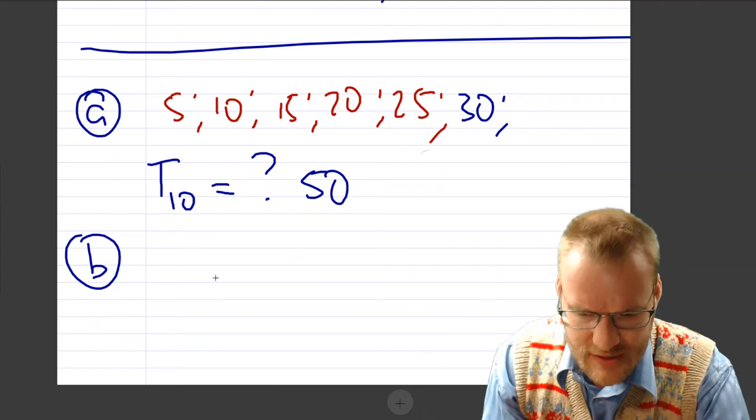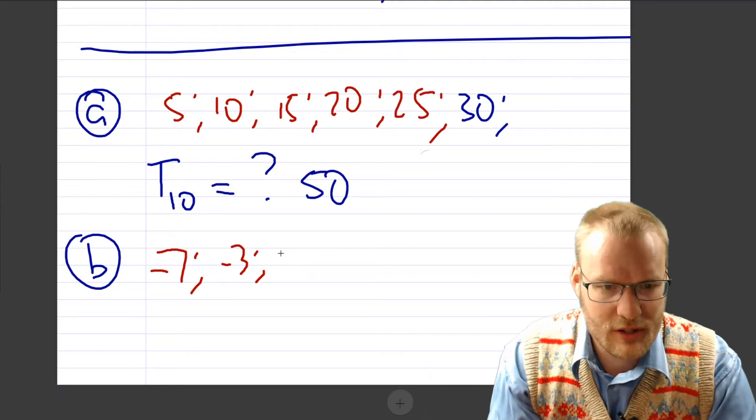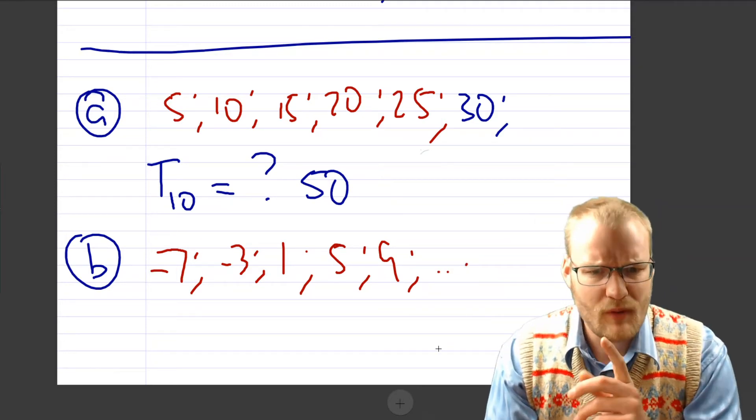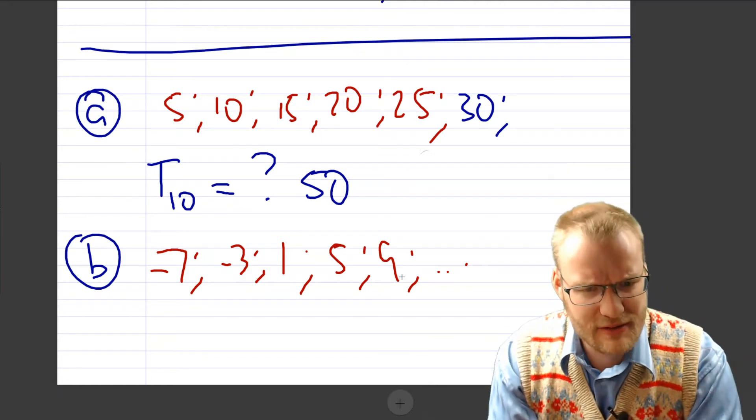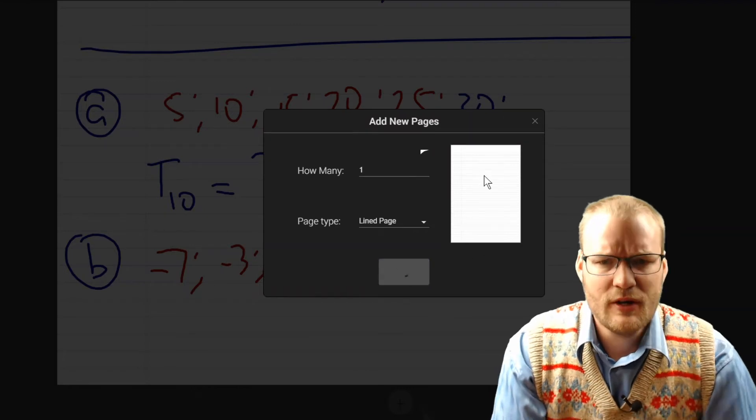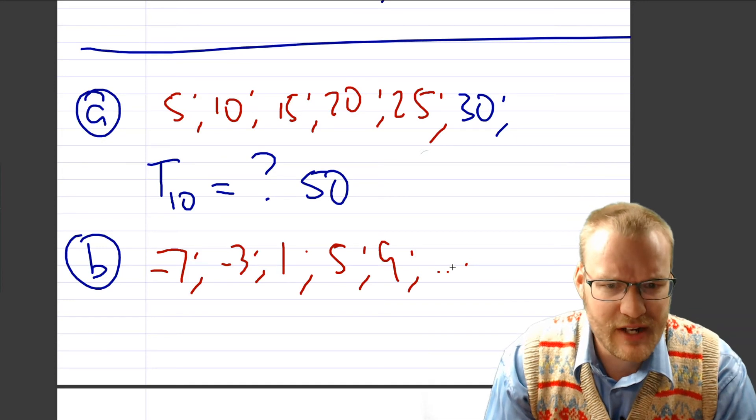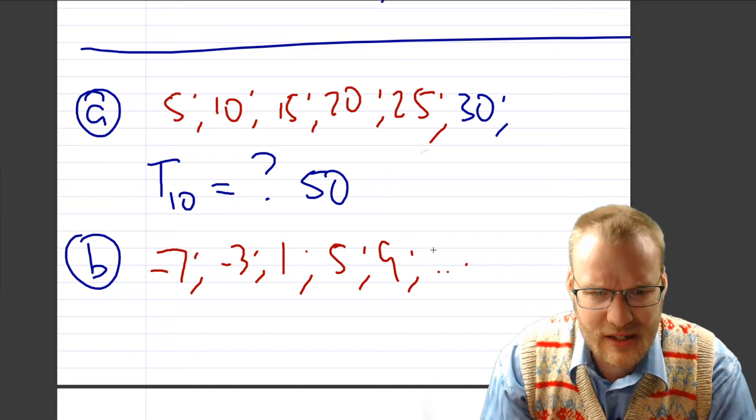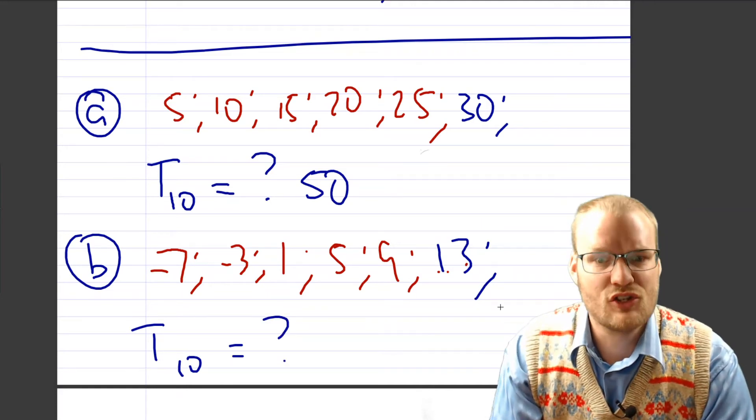What happens if we've got minus 7, minus 3, positive 1, 5, 9. How would you describe that pattern? Okay, I'd probably describe it in a similar way. I know that we, looks like we're adding 4 each time. So therefore, what would the next term in our pattern be? If we went minus 7, minus 3, 1, 5, 9, our next term would be, yeah, well, what is 9 plus another 4 would give us 13. So the next question remains the same. What would our 10th term be?